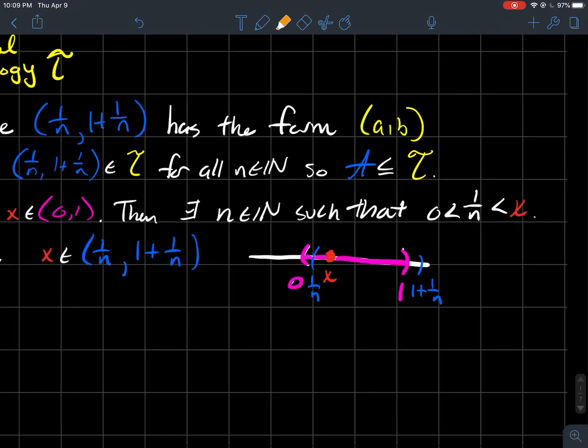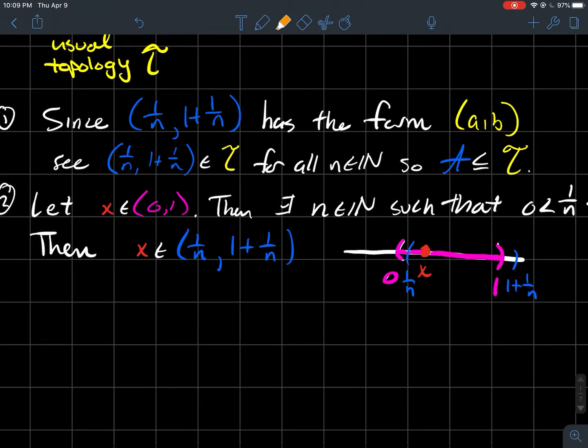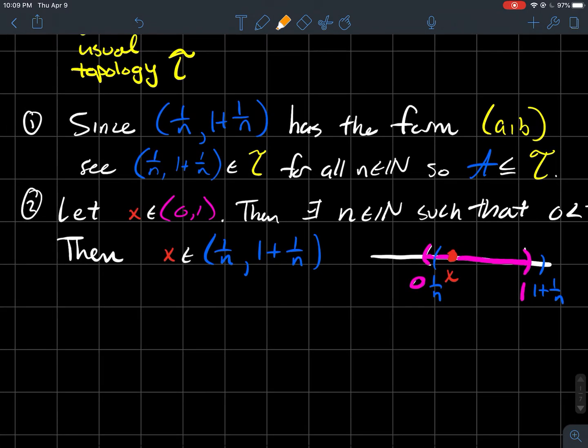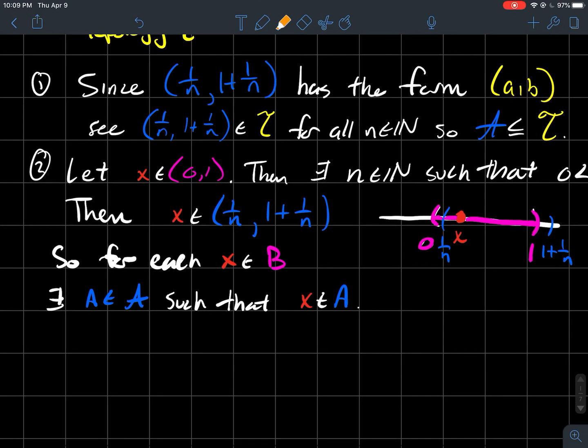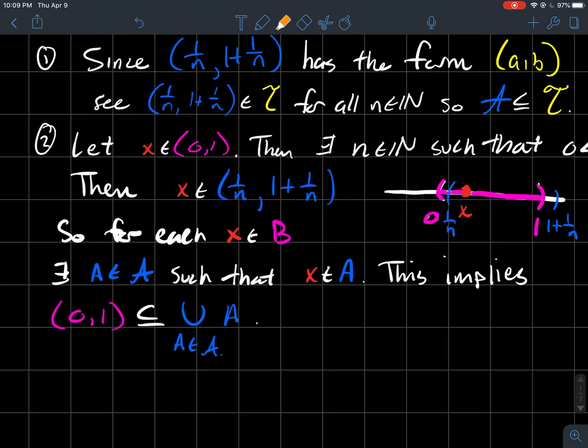Think about this interval from that one over N to one plus one over N. We'll notice that X is contained inside of that blue interval now. So what did we just do? We just showed that no matter how you pick an X in B, you could always construct a blue interval from your fancy collection. You could always find a regular A in fancy A such that little X lives in regular A. Since you could do that for all X,